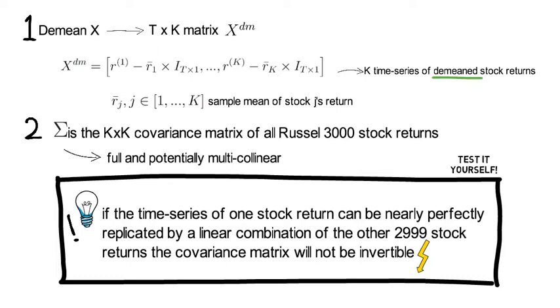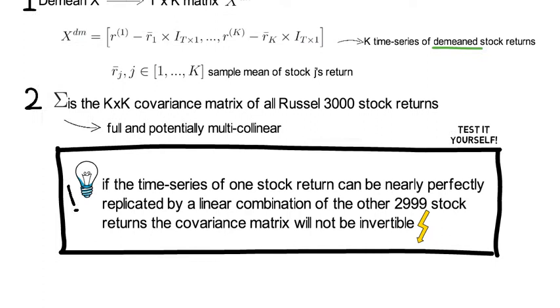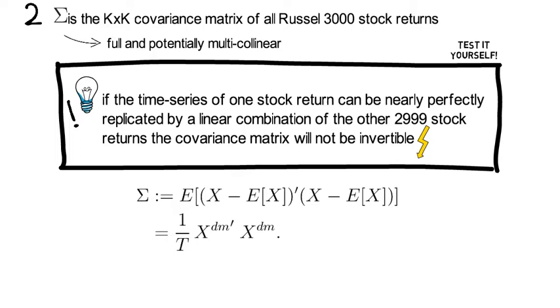I would be surprised if the rank of such a covariance matrix was larger than 100. So let's look at what the covariance matrix sigma looks like, and we can rewrite that as 1 divided by T, X^dm transpose times X^dm.